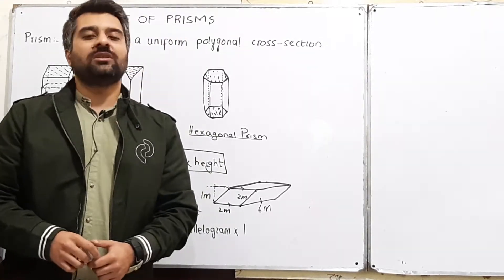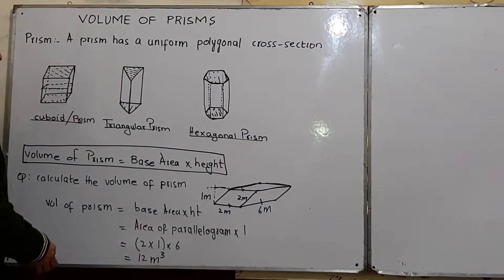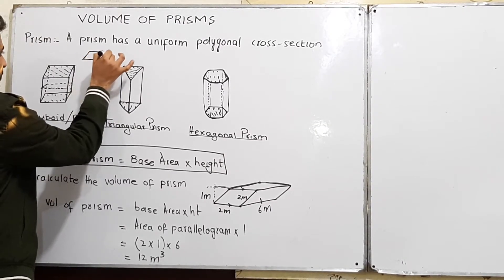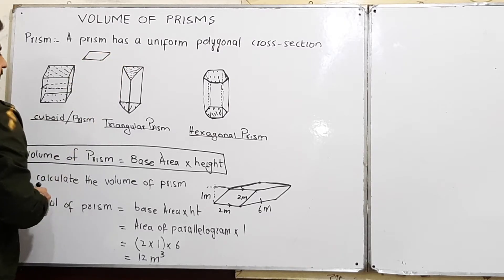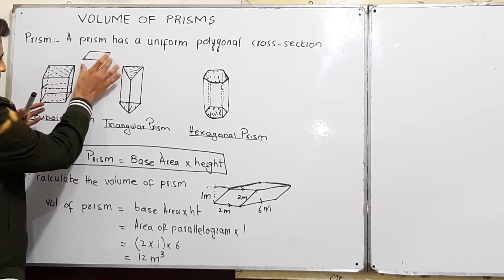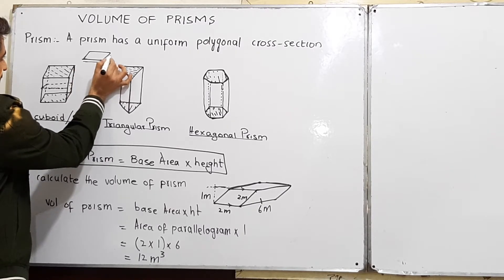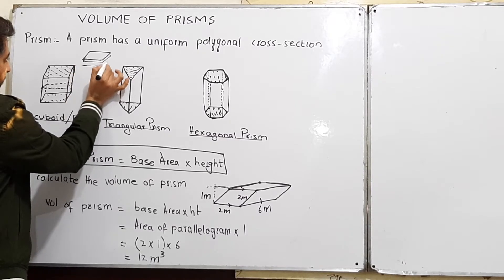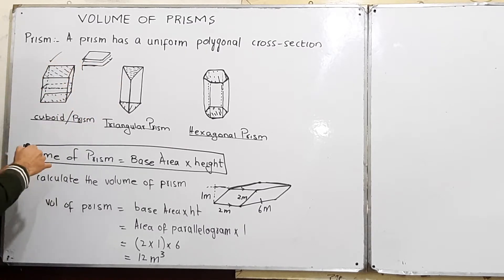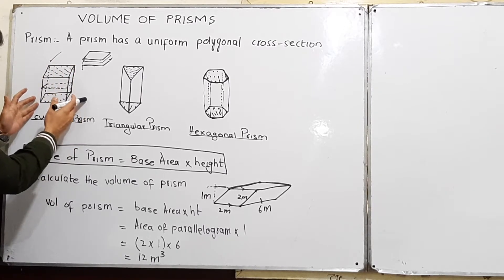In this video I am going to explain about prisms and the volume of a prism. Now what is a prism? Suppose we have a cardboard of the shape of a rectangle, and if you pile up a number of cardboard pieces of the same shape — stacking them one on top of another — you will get a shape like this. If you stack up a number of rectangular cardboard pieces, you will get a shape like this.